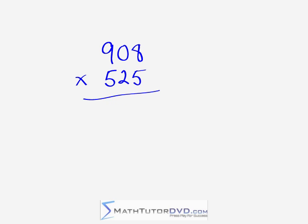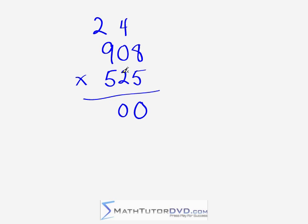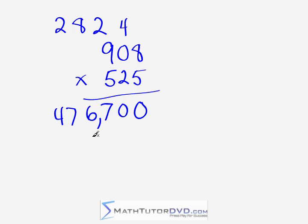Our final problem is 908 times 525. Start in the right-hand column: eight times five is forty — put a zero, carry a four. Criss-cross: this gives zero; eight times two is sixteen, plus four is twenty — put a zero, carry a two. Three-way criss-cross: nine times five is forty-five, eight times five is forty; forty-five plus forty is eighty-five, plus the carry is eighty-seven — put a seven, carry an eight. Leading criss-cross: zero times five is zero, nine times two is eighteen; eighteen plus the carried eight is twenty-six — put a six, carry a two. Leading multiplication: nine times five is forty-five, plus two is forty-seven. The final answer is 476,700.